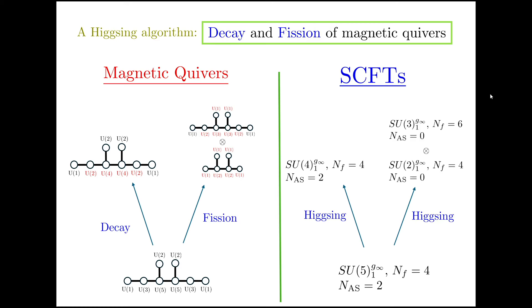Here's the important part. For the magnetic quiver, if I'm able to figure out all possible decays and all possible fissions, which is something that's easy to do using our efficient Mathematica code, then I'm able to figure out all possible Higgsings of the SCFT.